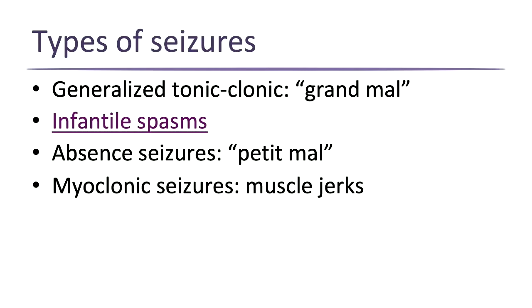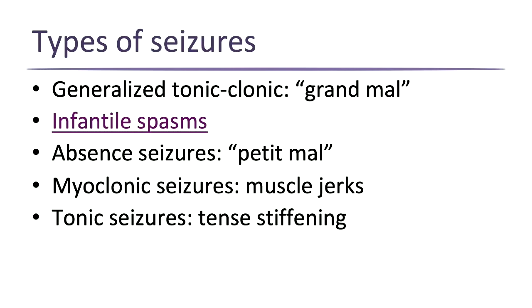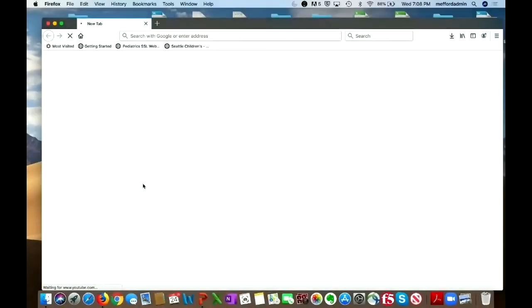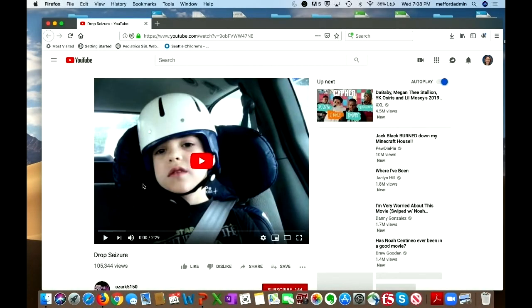There are myoclonic seizures — muscle jerks in an arm or a leg, unanticipated because they're a seizure, that can certainly interfere with daily living. Tonic seizures, seen in many severe pediatric epilepsies, are just the tonic part of the tonic-clonic seizure — your muscles are stiff and you can't do anything. Another type is called a drop seizure or atonic seizure, which means no muscle tone.